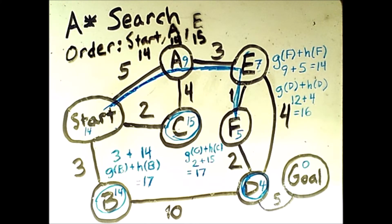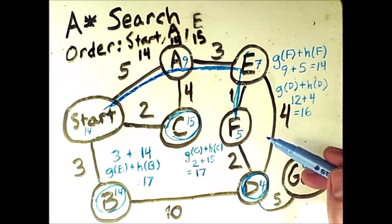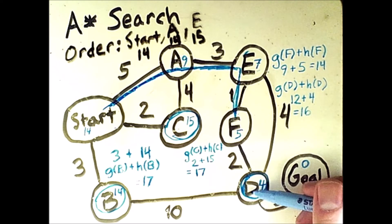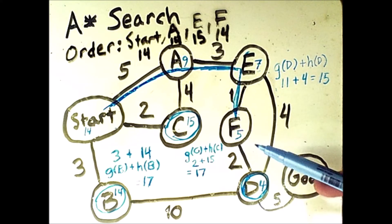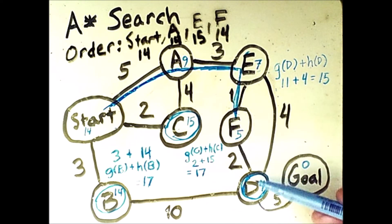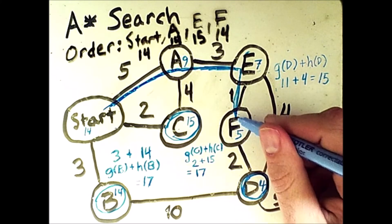But what is interesting now is that we can also reach d from f. So we have to consider what the overall estimate, in particular what the new g value is, for d going through f. So if we go through f, the value to reach d is 5 plus 3 plus 1 and then plus 2, that would be 11. And then plus the heuristic value of 4 to get 15. That's less than the alternative route through here that was 16. So we're going to go to d, but specifically we're going to go via f. And at this point, the goal is on the fringe.